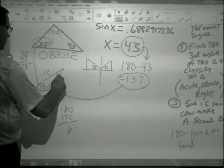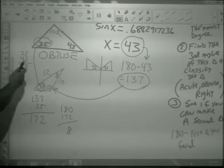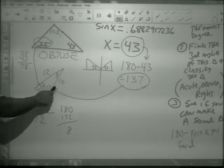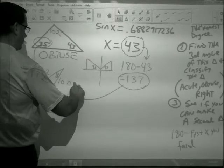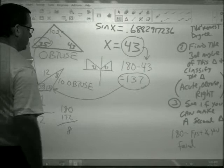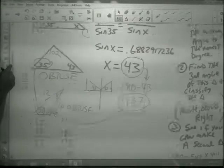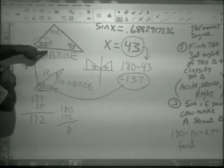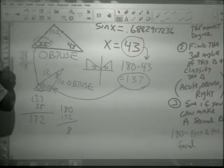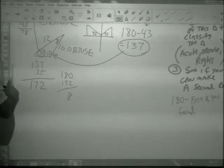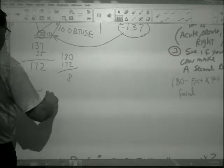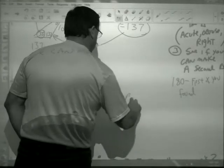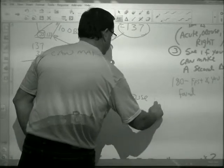180 minus 172 is 8 degrees. So, this is 8 degrees. We can make a second triangle. What kind of triangle is this? This is also an obtuse triangle. The question was, how many and what type? I got an obtuse one here. This isn't always obtuse, but it is for this problem. I got an obtuse one here. I'm going to say we can make two obtuse triangles.